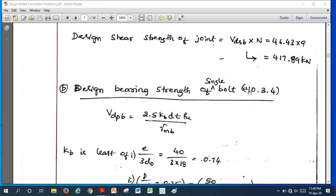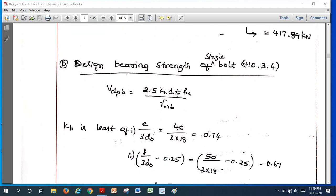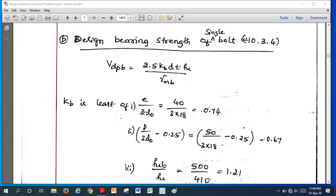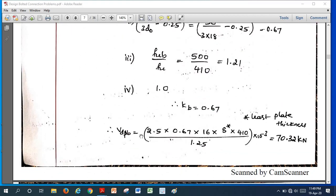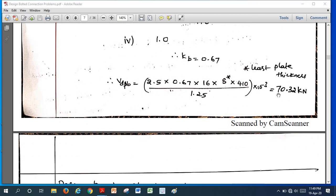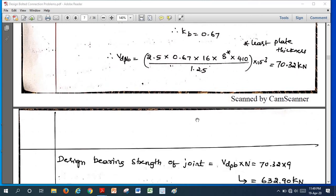Now we should calculate bearing strength of the single bolt according to clause 10.3.4. This is the Vdpb formula: 2.5 kᵦ d t fᵤ / γₘᵦ. So if you substitute all the values you will get kᵦ is 0.67. As per the formula here, 2.5 kᵦ d, the diameter of the bolt is 16. Here 8 mm is taken as least thickness. Here since we have connected different plates, we have ultimate strength of the plate 410 / 1.25 × 10⁻³ to get answer in kN. We will get 70.32, that is bearing strength of single bolt.